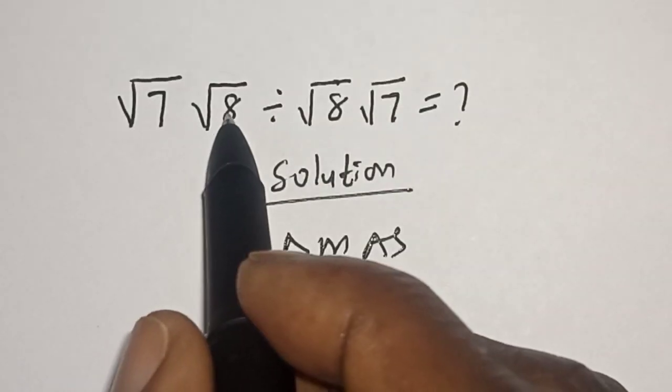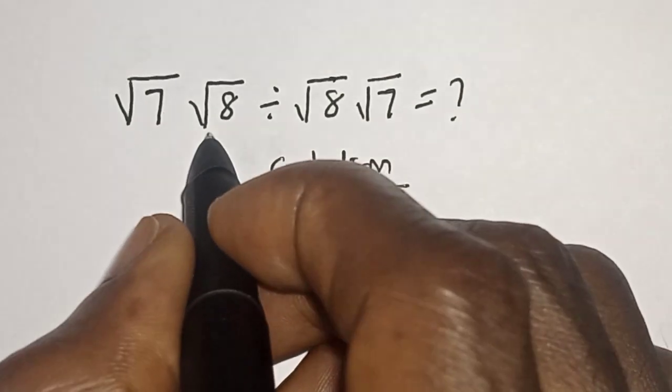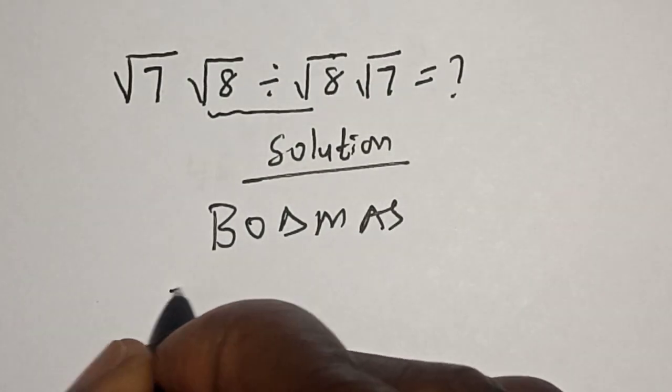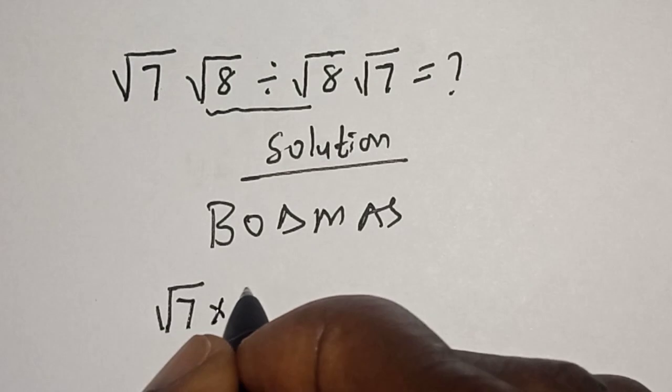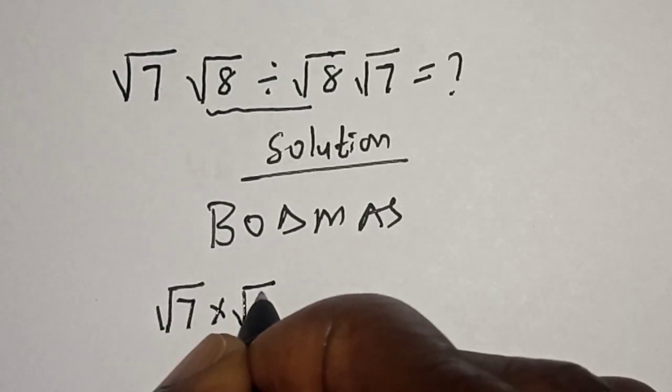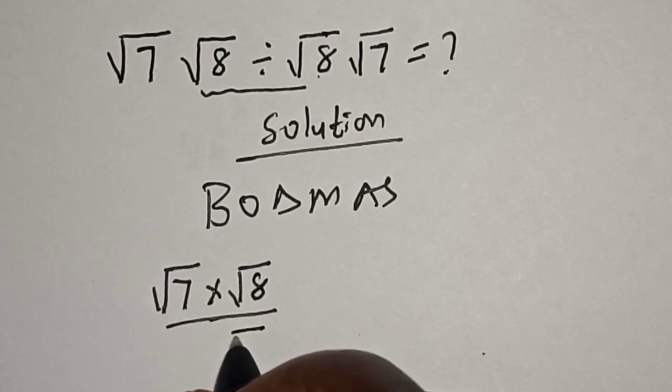We have division first before multiplication, so let's work with these two. That is square root of seven multiplied by square root of eight, then divided by square root of eight multiplied by square root of seven.